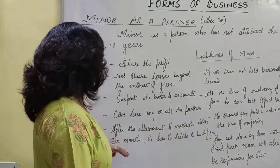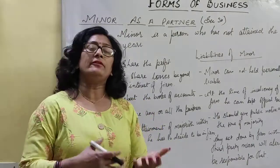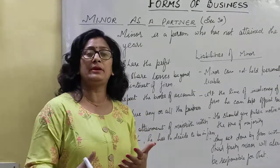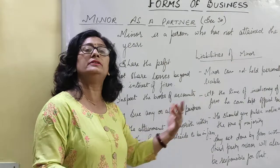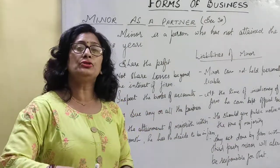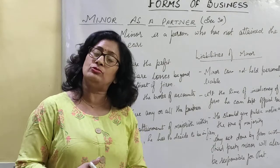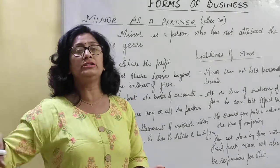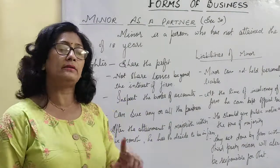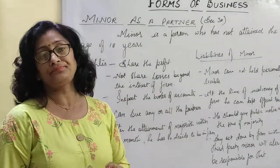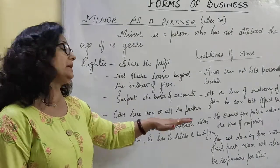After the attainment of majority, within 6 months, he has to decide whether he should remain in the firm or not. Whenever a minor enters the firm, after some time, if he attains majority — agar minor ne majority attain karli, yani 18 years se upar ho gaya — then within 6 months, he should give a declaration in front of the members, stating whether he wants to continue as an active partner or wants to withdraw. Woh partnership mein rahna chahata hai ya nahi, yeh batana padta hai.